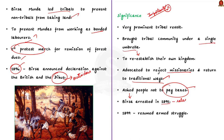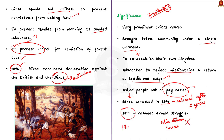Then in 1899, Birsa resumed his armed struggle along with the people. He raided police stations, government property, churches, and the houses of Zamindars. Finally, the British caught him in 1900 from Jamkopai forest, Chakradharpur. Birsa Munda died on June 9, 1900 while lodged at Ranchi Jail, aged just 25.